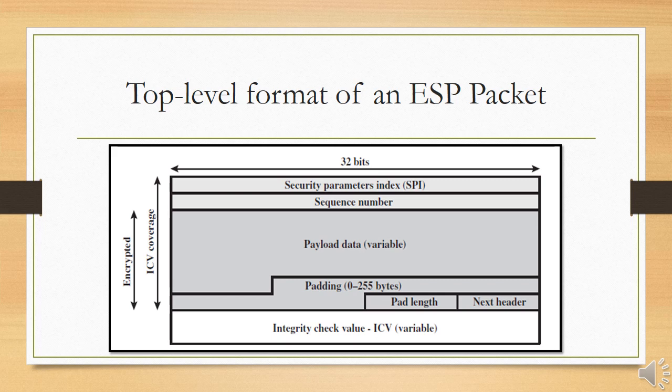Payload Data is variable in size. It is a transport-level segment when working in transport mode, or an IP packet in tunnel mode, and is protected by encryption. Padding can be 0 to 255 bytes, the purpose of which is discussed later.